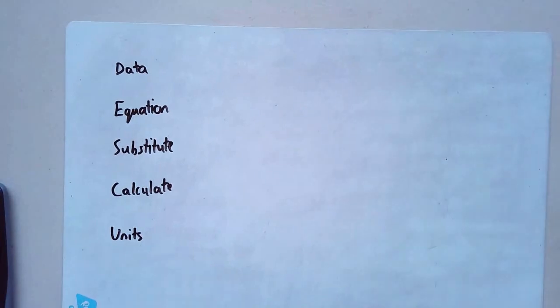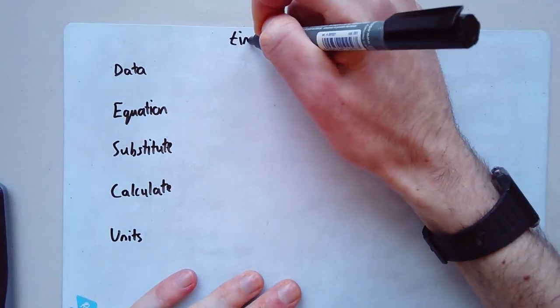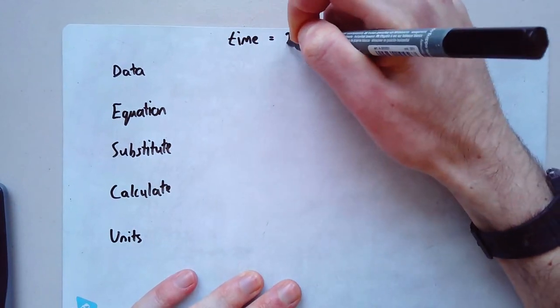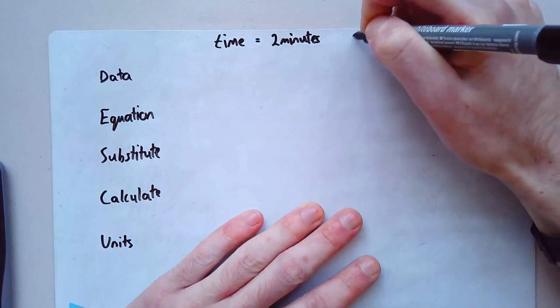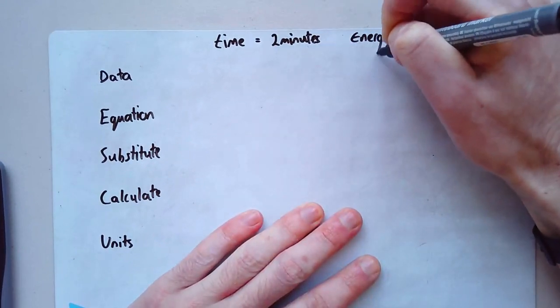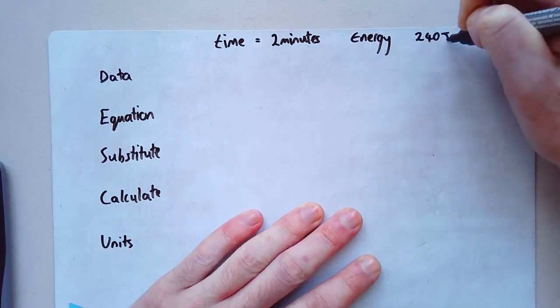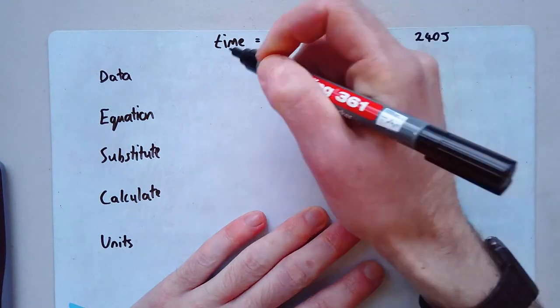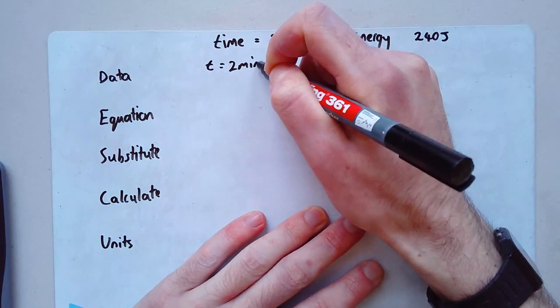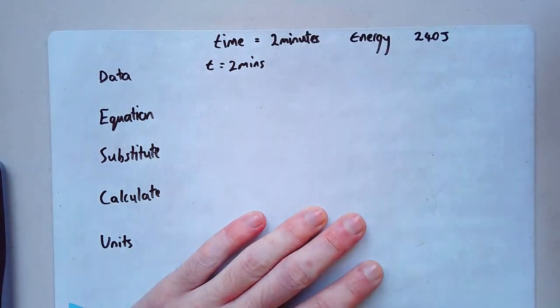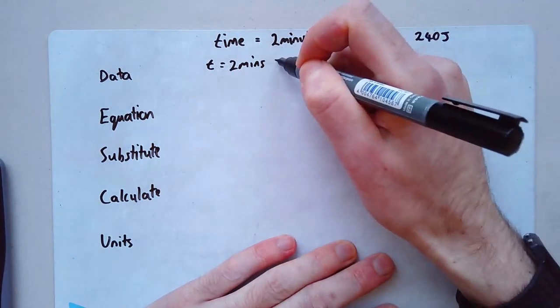Let's say I've been given a time of two minutes and an energy of 240 joules. My data, t equals two minutes. Now, I actually don't want this in minutes. Because the equation for power works in seconds. So I want to change that straight off the bat into seconds.